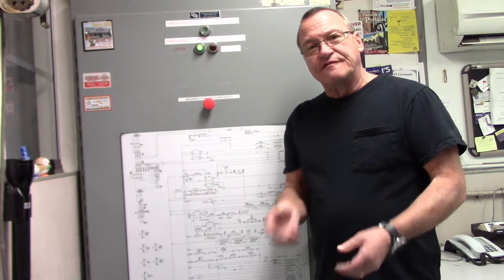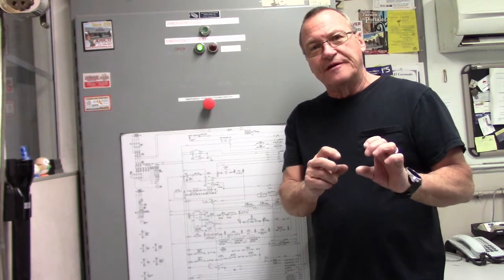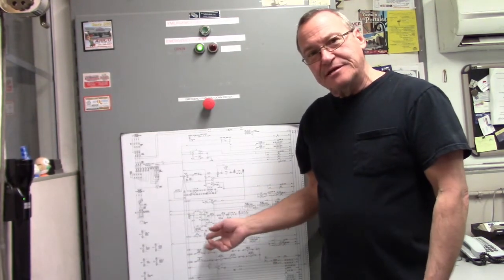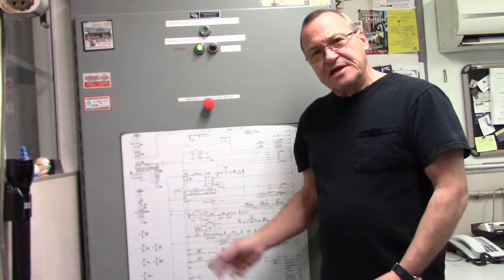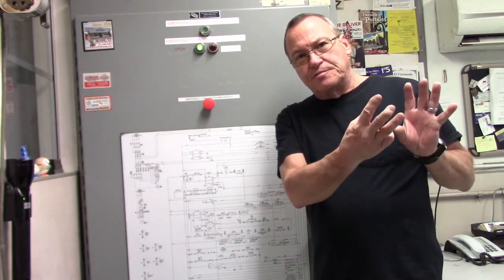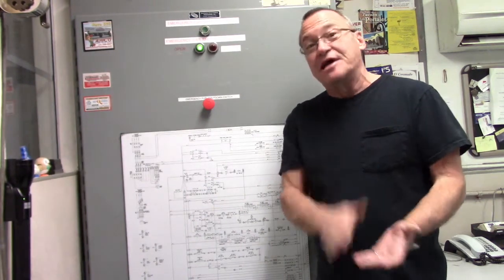the boiler would not go into purge. FireEye told us it had a problem, M8 limit open. We came in here, looked at the schematic, traced out the M8 loop to narrow it down to three components, then we looked at the components on the boiler and were able to physically see that it was a switch not made.